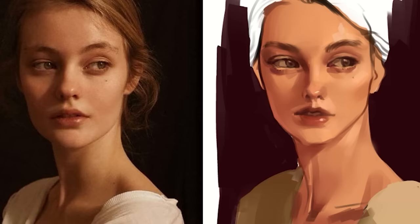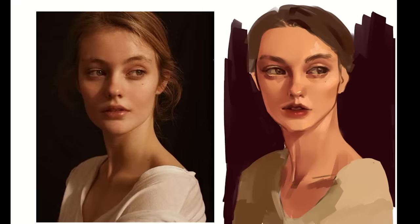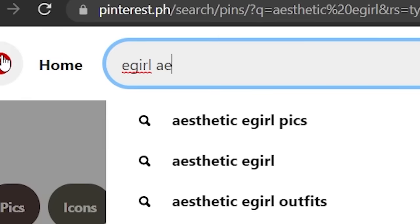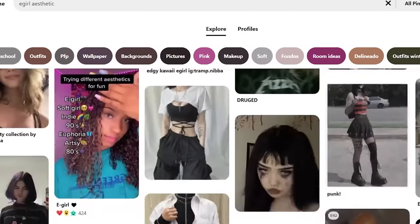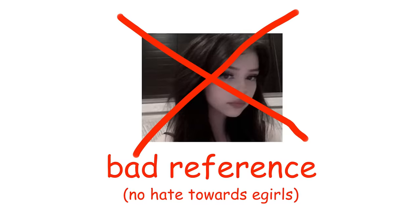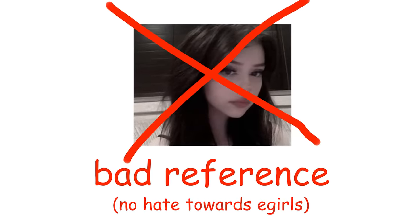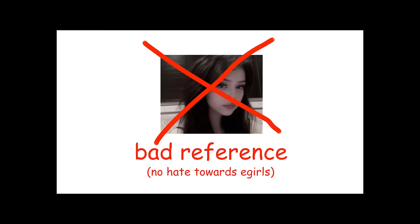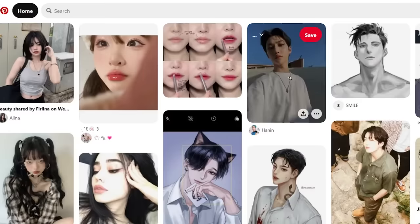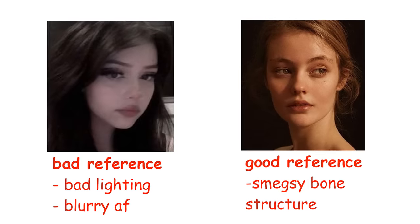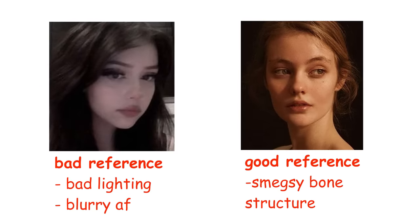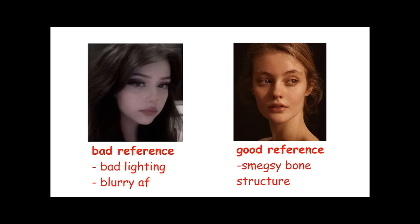So anyway, let's try this method on a face. Don't just wing it — first, we need a reference. I don't want you to grab a photo of a random e-girl with blurry filters — that's what we call a bad reference. The key is to find good references. Open up Pinterest, literally just type 'portrait,' and boom. The difference between a good reference and a bad reference — look at the portrait: you can easily see the shadows and lots of good bone structure.